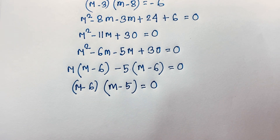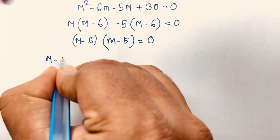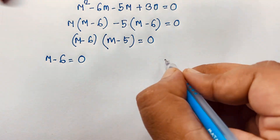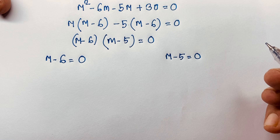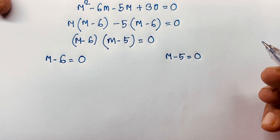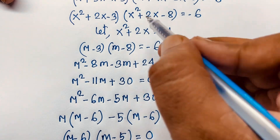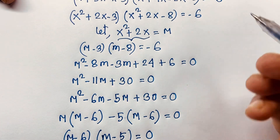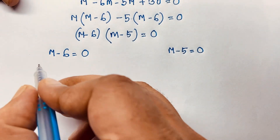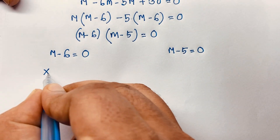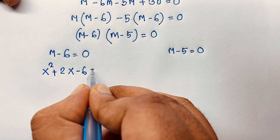We have two cases. Case 1: m minus 6 equals 0, so m equals 6. Recalling that m equals x squared plus 2x, substituting gives x squared plus 2x minus 6 equals 0.